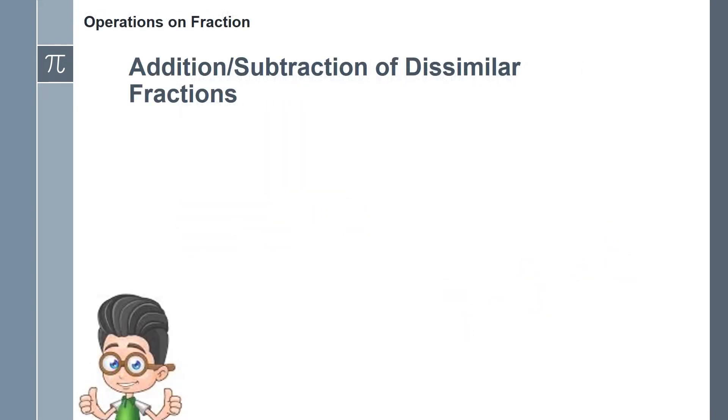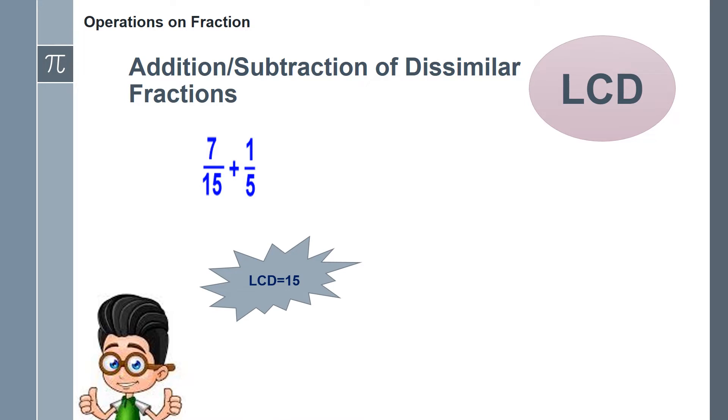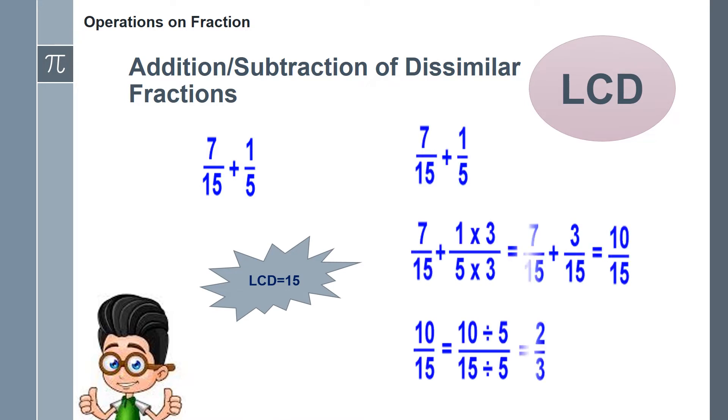To add dissimilar fractions, you need to determine the least common denominator or LCD of the fractions involved. For example, 7 over 15 plus 1 over 5. Since LCD is the least number that can be divided by the denominators of the given fractions, then we can say that the LCD of 15 and 5 is 15. In this example, 1 over 5 is being expressed to higher terms in which the denominator of the new terms is the LCD. After that, we can add the fractions as similar fractions.